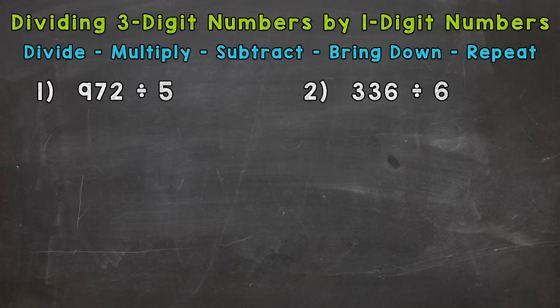So let's jump into number one, where we have 972 divided by 5. The first thing we need to do is set this problem up. The first number here, 972, this is our dividend. So when we set up the problem, the dividend goes underneath the division bar. That's the number that we're splitting or dividing up.